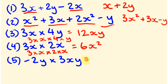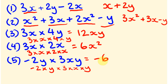Question 3: 3x times 4y. Write as 3 times x times 4 times y: coefficients give 12, result is 12xy. Question 4: 3x times 2x. Write as 3 times x times 2 times x: 3 times 2 is 6, x times x is x squared, so 6x squared. Question 5: minus 2y times 3xy. Write as minus 2 times y times 3 times x times y: coefficients give minus 6, x stays, y times y is y squared — so minus 6xy squared. Note: order doesn't matter, so minus 6y squared x is the same thing.